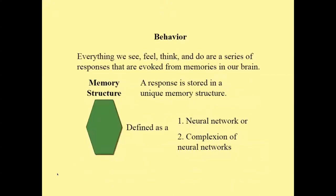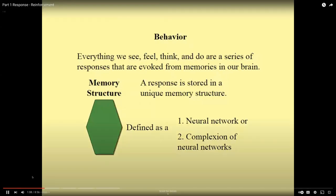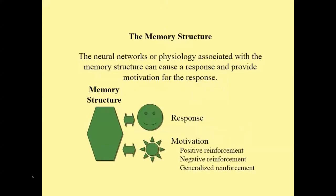Everything we feel, think, and do are a series of responses evoked or stimulated from memories in our brain. All responses have a unique memory structure. I use memory structure to describe all responses because it simplifies the complexity of our brain. I define a memory structure as a neural network or a complexion of neural networks. The neural networks or physiology associated with a memory structure can cause a response and provide motivation for the response. There are several sources for motivation: positive reinforcement, negative reinforcement, and generalized reinforcement.